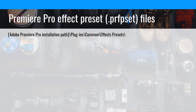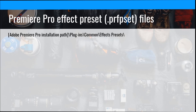Next up: Premiere Pro effects presets. They're .prfpset files and they're in the Premiere Pro installation location. So wherever you have Premiere Pro located — in your Applications folder on Mac or on Windows — there's a plugin folder inside the Common folder, and inside that is the effects presets folder. If for whatever reason you need to get to them, that's where they are.